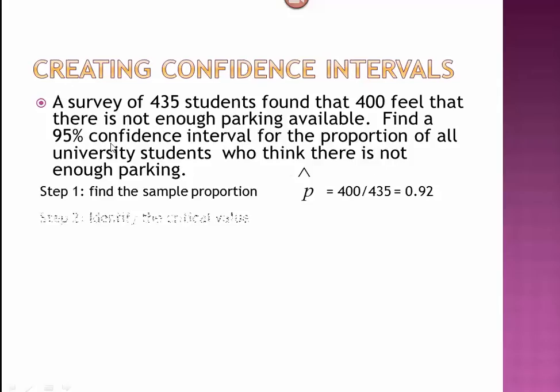Because we're doing a 95% confidence interval, we need to know what critical Z value we're going to use. The Z value for a 95% level of confidence is 1.96.